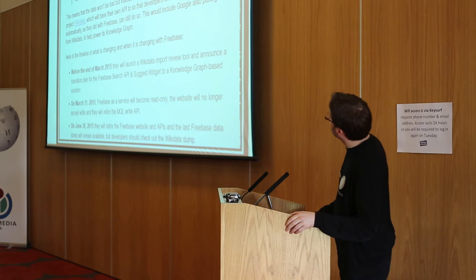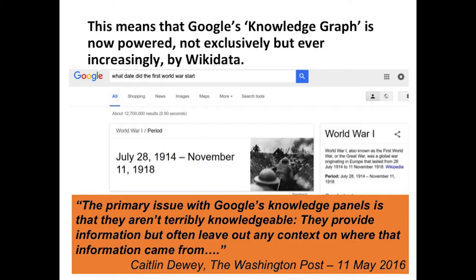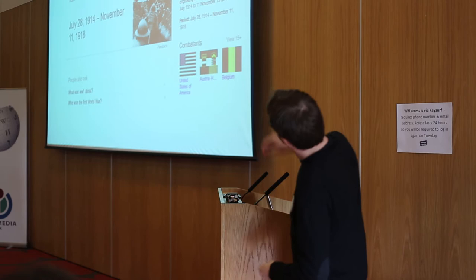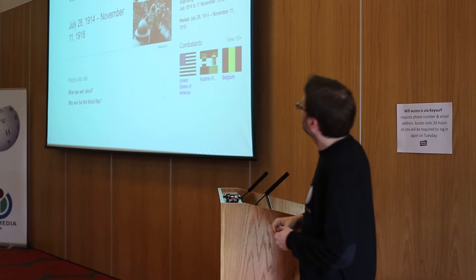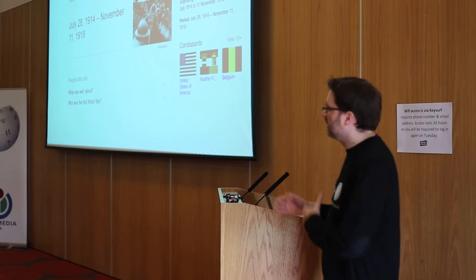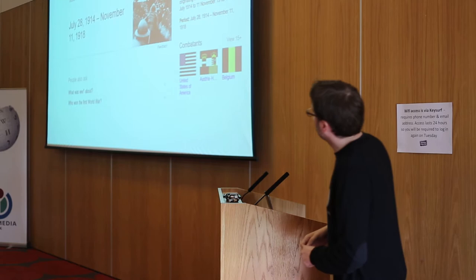We helped transfer the data from Freebase to Wikidata, and that happened in mid-2015. The information on Google's knowledge panels — for example, if you typed in 'what date did the First World War start,' it would come up with a suggested date, a Wikipedia article, and flags of the combatants. This is not exclusively, but increasingly, powered by Wikidata, which shows its prevalence given the market dominance of Google as a global search engine.